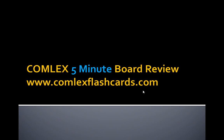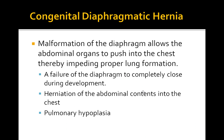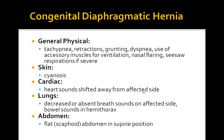Today's topic is congenital diaphragmatic hernia. This is mainly a malrotation of the diaphragm which allows the abdominal organs to push into the chest, thereby impeding lung formation and function. It causes a failure of the diaphragm to completely close during development, and herniation of the abdominal contents into the chest can lead to pulmonary hypoplasia.